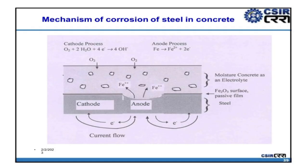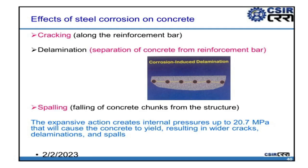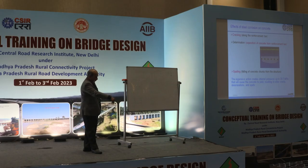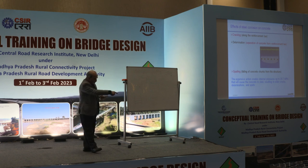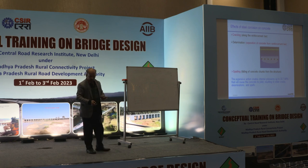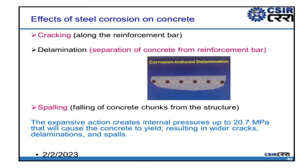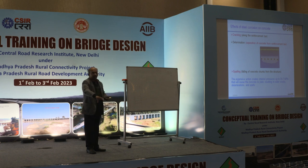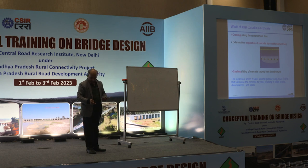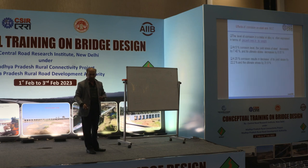Because of corrosion, a crack will first form along the profile of the reinforcing bar in the concrete — a straight-line crack along the bar is an indication of corrosion. Then that part of the concrete gets separated from the rest — called delamination — and eventually falls off, which is called spalling.